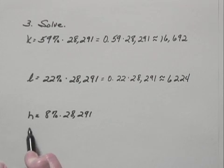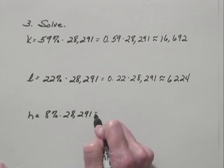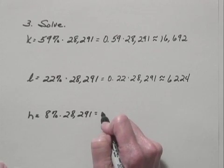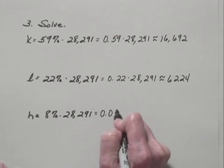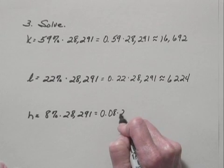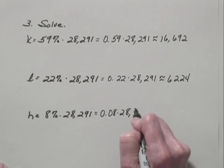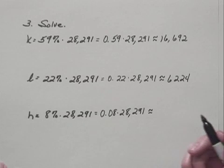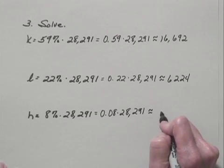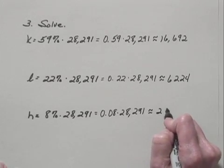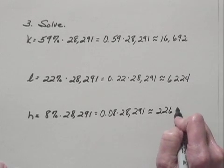And the third equation. Again we're going to convert the percent to decimal notation. 8% is 0.08, and then we have times 28,291. And multiplying and rounding to the nearest one, we get 2,263.